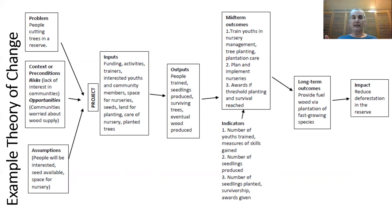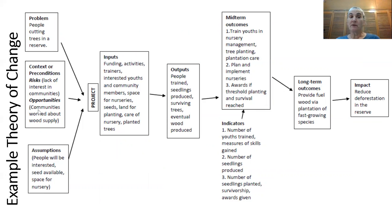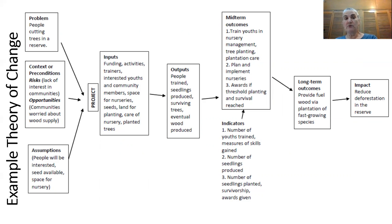Here's a model layout of what this theory of change for the project might look like. You have the problem — people are cutting down the trees — and the pre-existing conditions that may lead to risk or opportunity for success. If the communities are not interested, that'll be a barrier to success. If the communities are worried about their wood supply, that might be an opportunity for success. Assumptions include that people are interested, that seed is available, and that there's space for a nursery in each community. There may be other assumptions to outline as well — these all feed into the project's success.